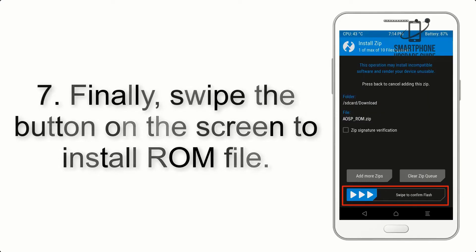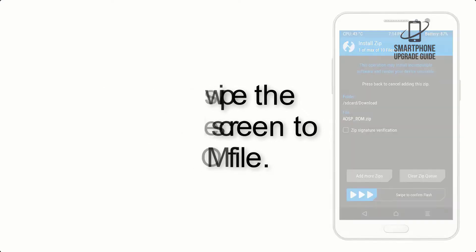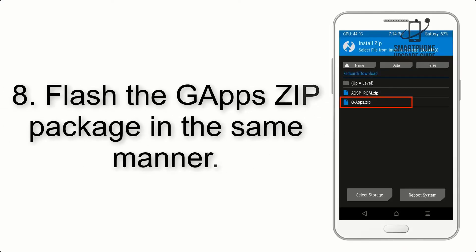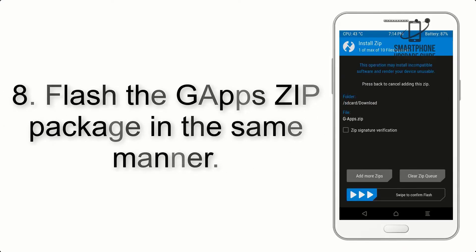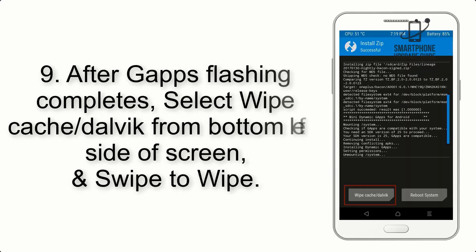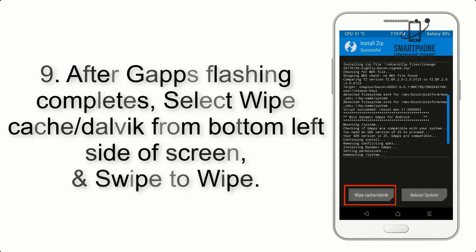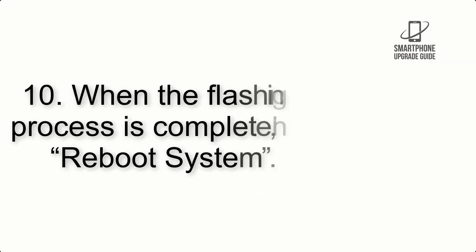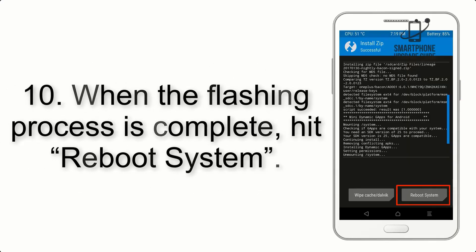Step 7: Swipe the button on the screen to install the ROM file. Step 8: Flash the GApps zip package in the same manner. Step 9: After GApps flashing completes, select Wipe Cache and Dalvik from the bottom left side of the screen and swipe to wipe.